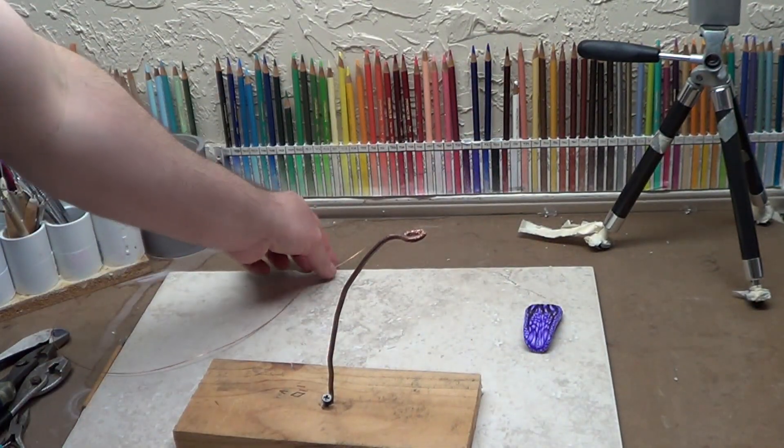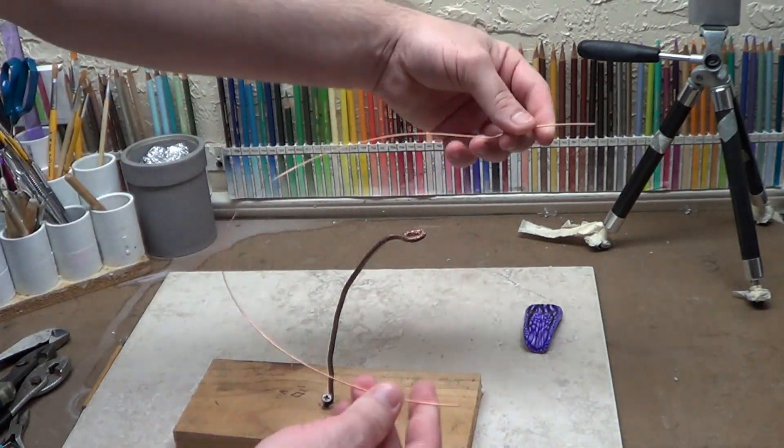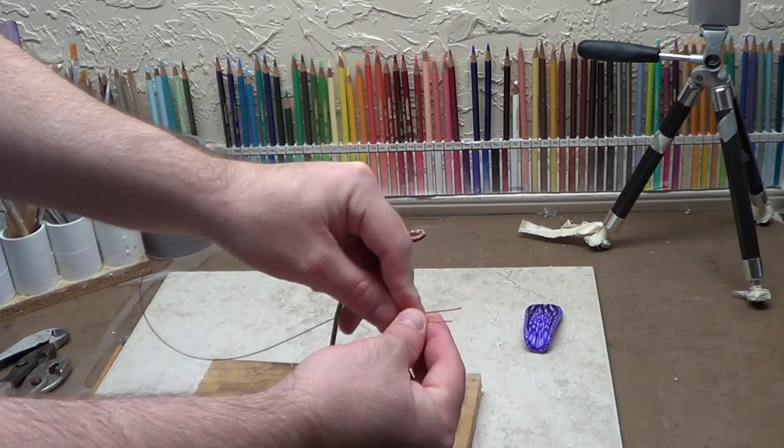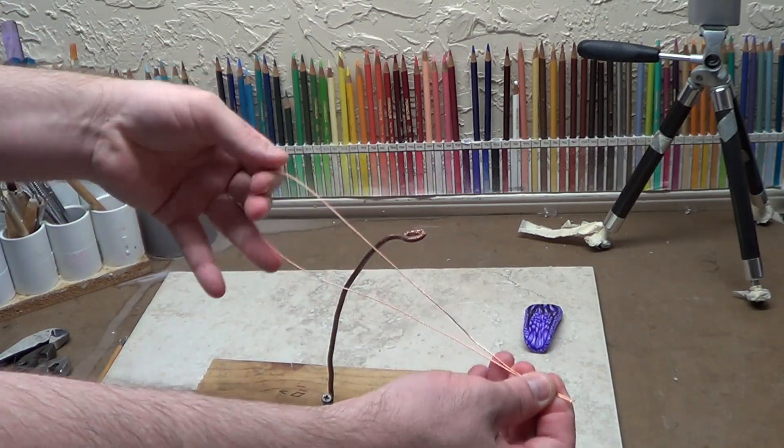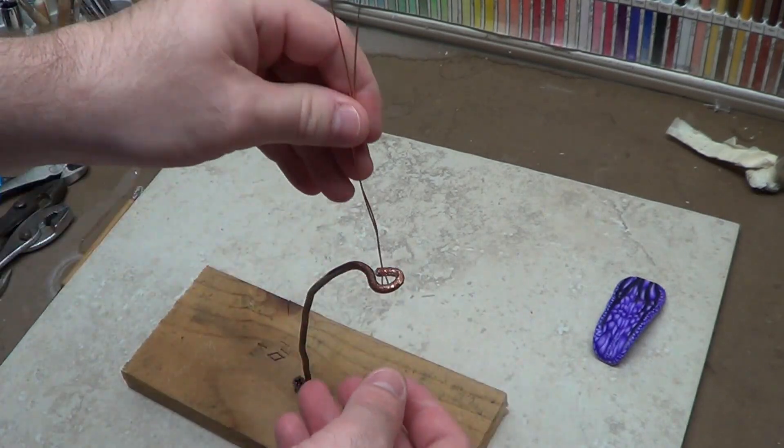So what I'm going to do, I'm going to take this copper wire. It's about a foot, a foot and a half. I'm going to fold it in half, like this.